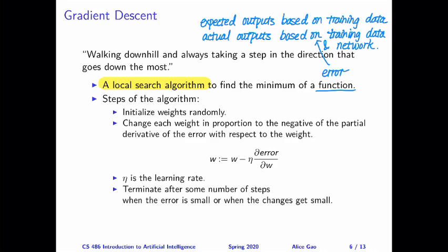The quote at the top of this slide gives a nice intuition about what gradient descent is doing. So it's walking downhill, we're trying to find a place in the search space such that the error is minimized. And we're always taking a step in the direction that goes down the most, the steepest. So the gradient or the partial derivative is trying to help us find that direction.